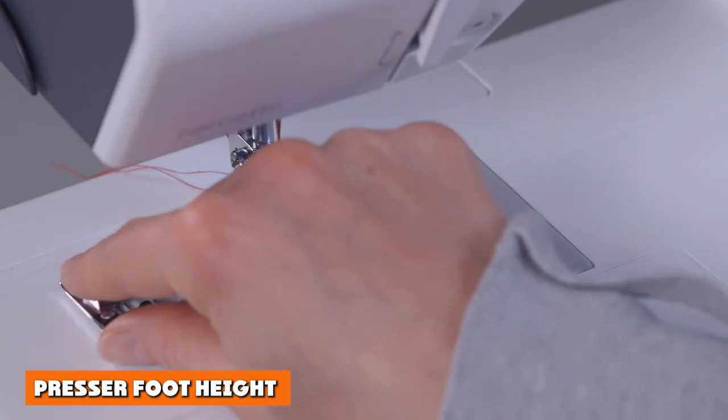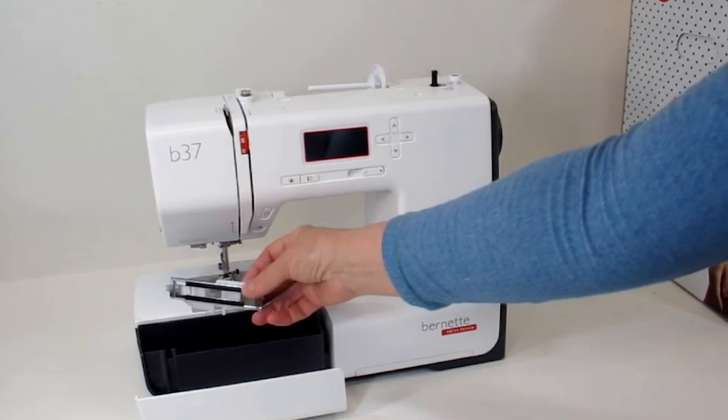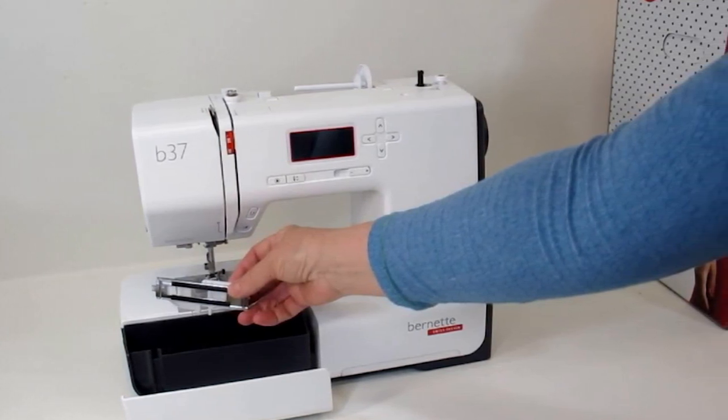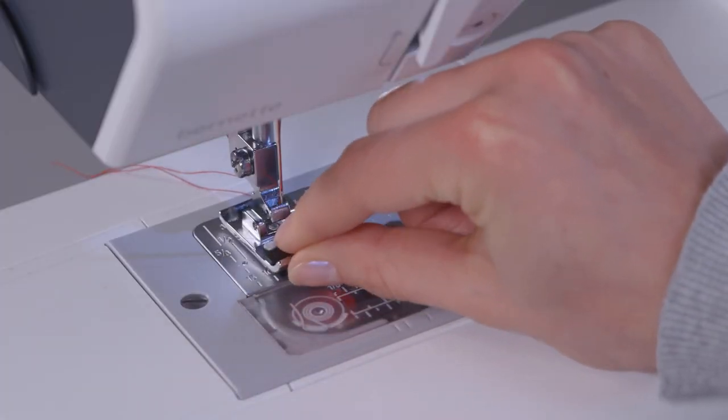The Bernett B37 has two height levels for the presser foot. Trying to sew together a taller stack of fabric, make the presser foot higher above the platform. Fewer pieces of fabric, simply lower it back towards the platform.